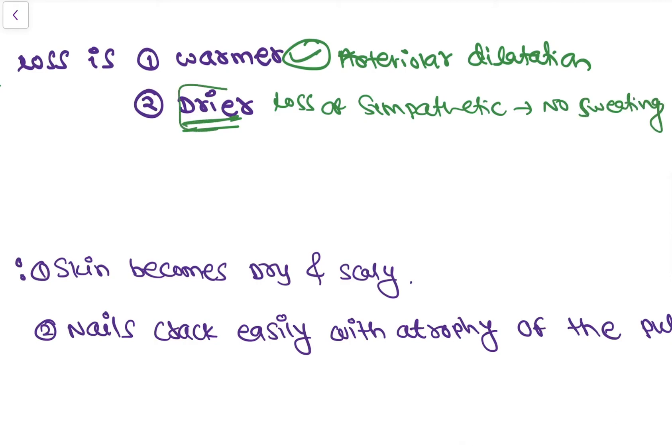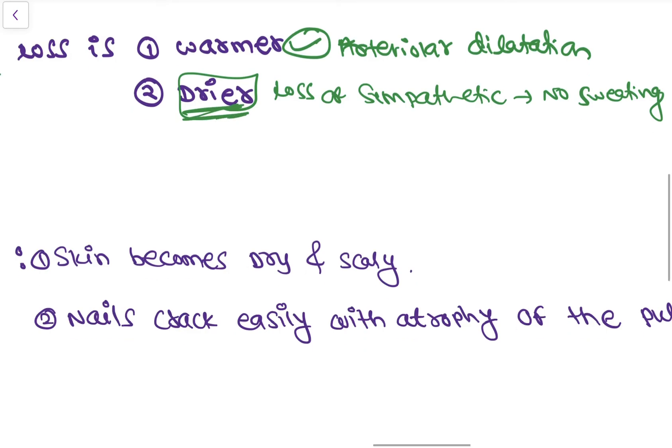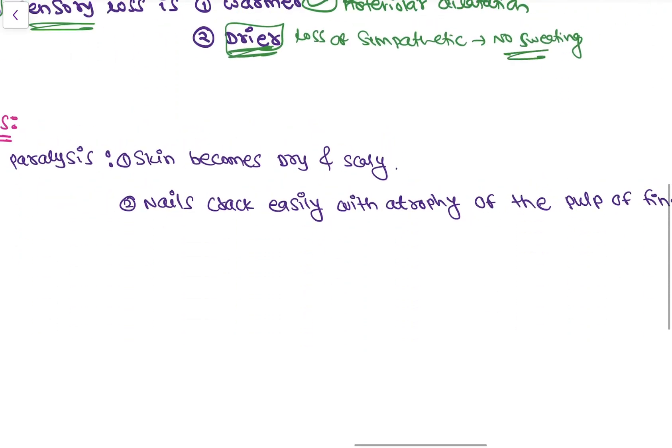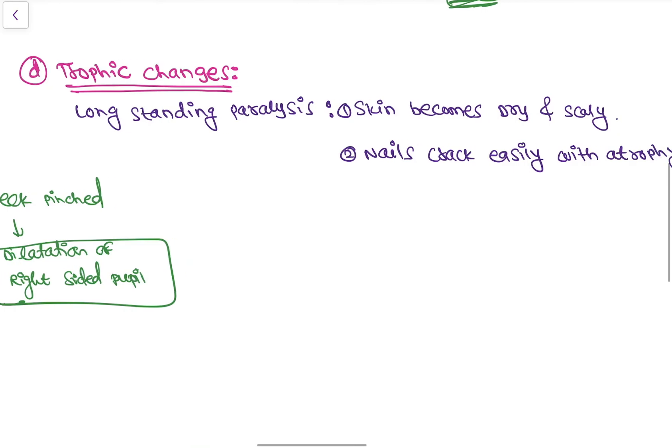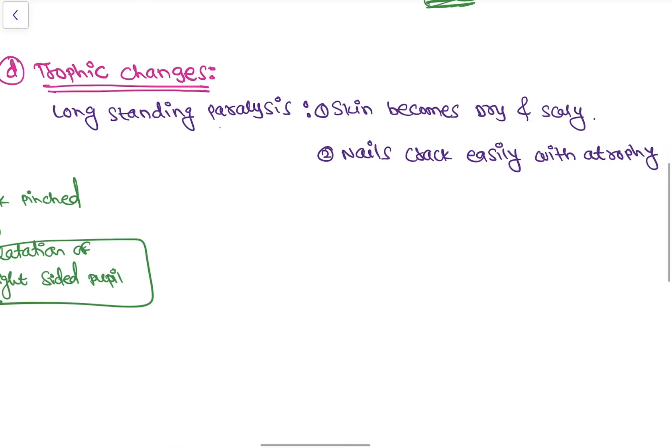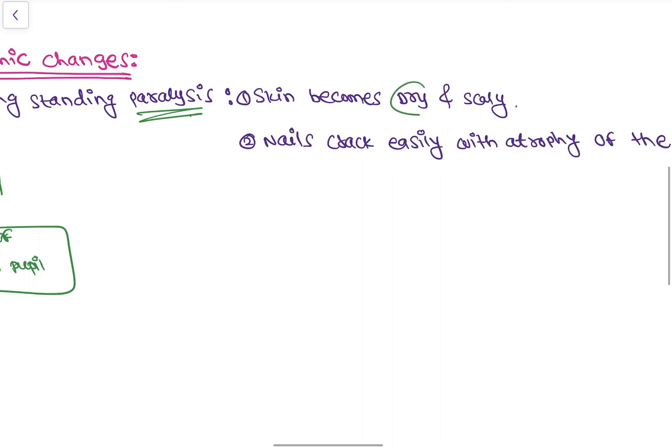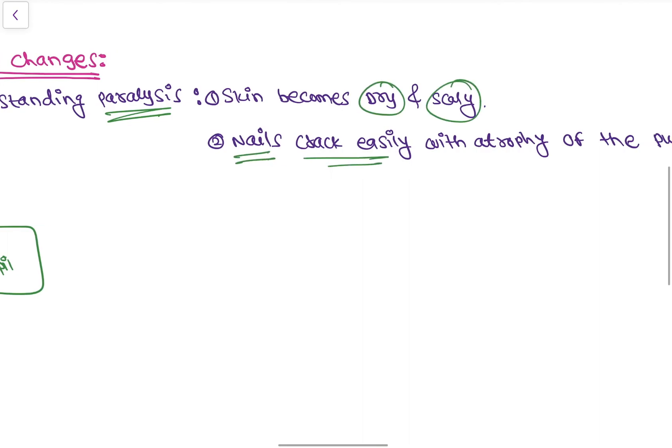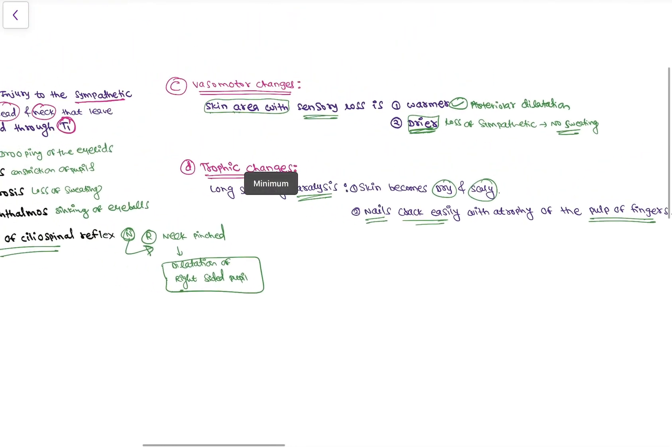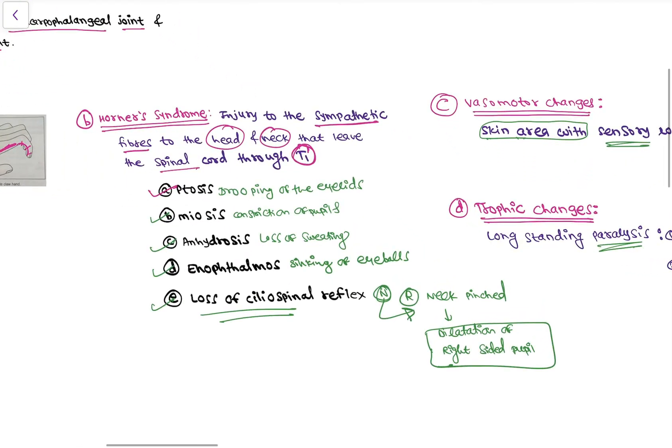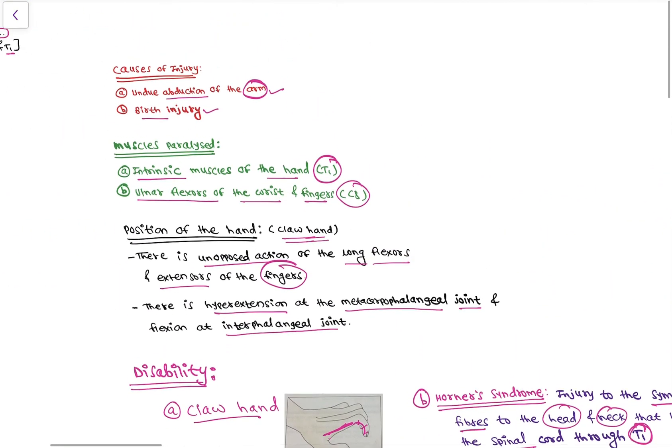Now the last change is trophic changes. So on long-standing paralysis the skin becomes dry and scaly and the nails crack easily, with atrophy of the pulp of the fingers. So this was all about Klumpke's paralysis.